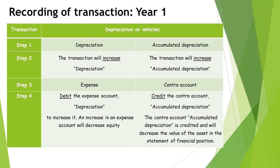Therefore, the depreciation account will be debited. The other affected account will be accumulated depreciation. The transaction will increase accumulated depreciation. The contra-account accumulated depreciation is credited and will decrease the value of the asset in the statement of financial position. Remember that in financial accounting, there will always be a debit with a corresponding credit.